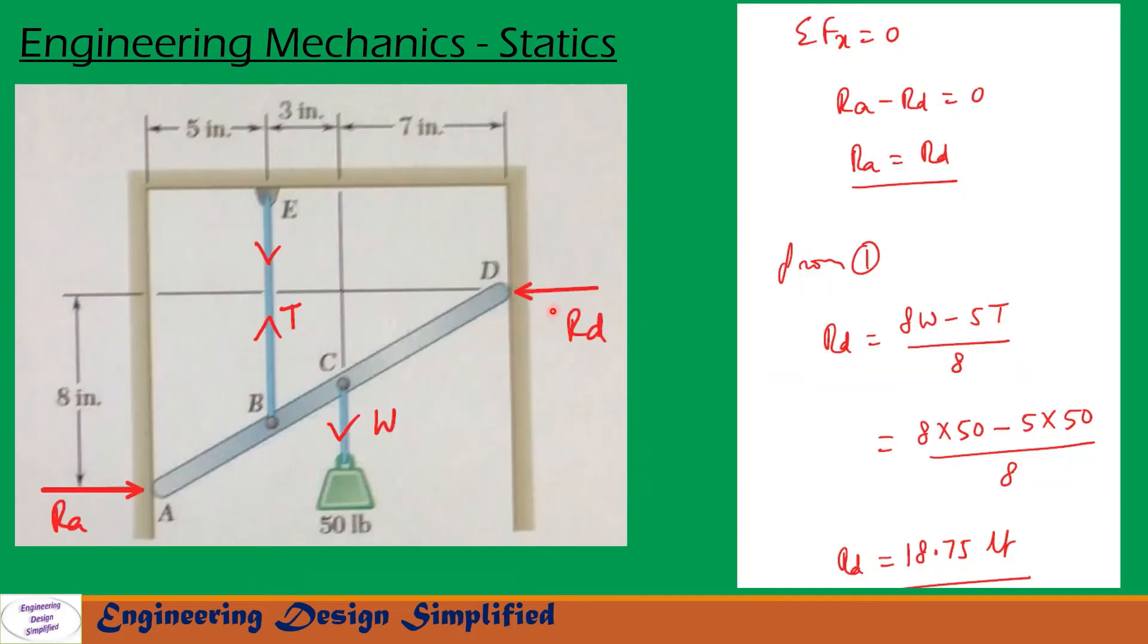Now let us see forces along horizontal. Along horizontal we have RA acting towards this direction and RD acting towards this direction. Let us write sigma FX equal to 0. From this we can write RA minus RD equal to 0, so RA equal to RD.